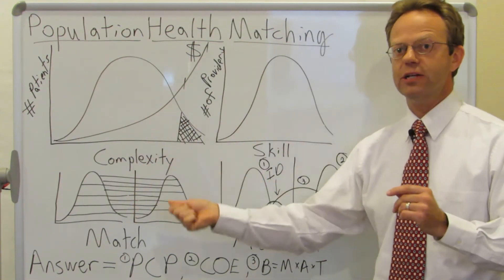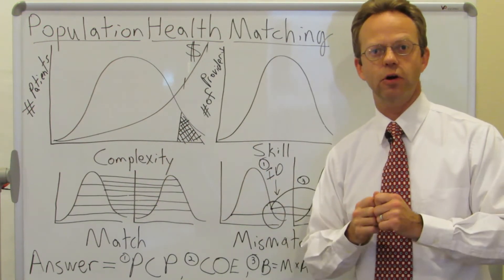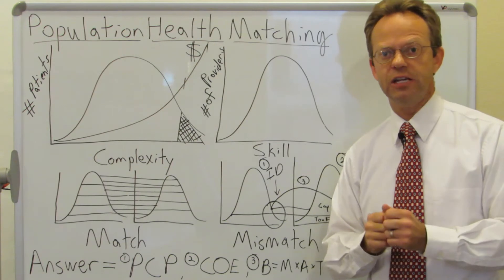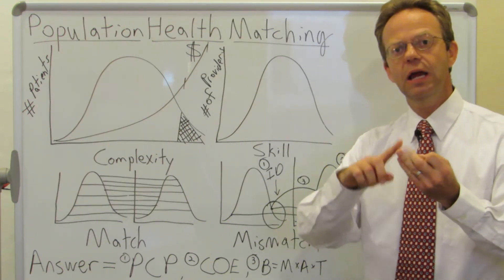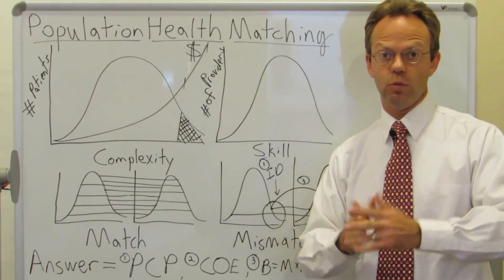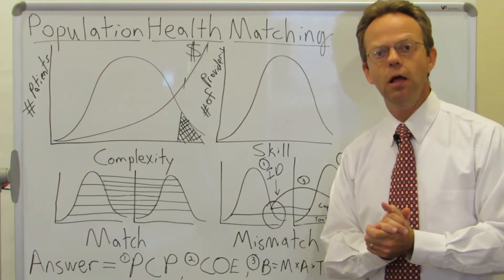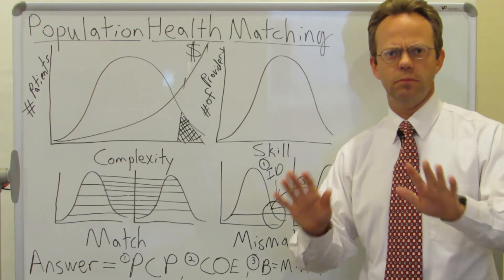You actually have to have behavior change. So you have to go to that BJ Fogg model of behavior change where behavior modification is a function of the motivation, the ability, and the trigger. And I would encourage you to watch my behavior modification video that goes into more detail about that.